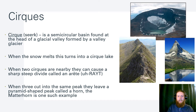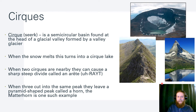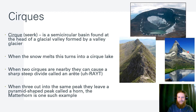Cirques are semicircular basins found at the head of a glacial valley, formed by a valley glacier. When the snow melts, they form cirque lakes. If two cirques are nearby, they can cause a cool steep divide called an arête. If three cirques are cutting into the same peak, we get a pyramid-shaped peak called a horn. A very famous example is the Matterhorn. So cirques become arêtes with two, and horns with three.